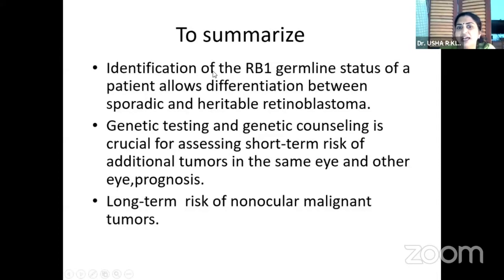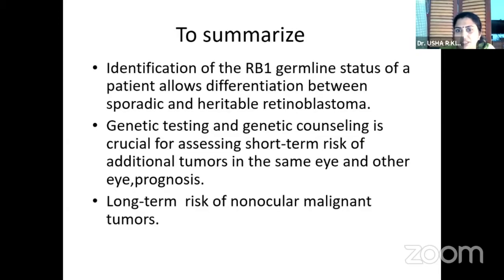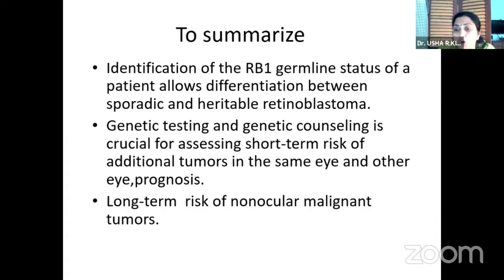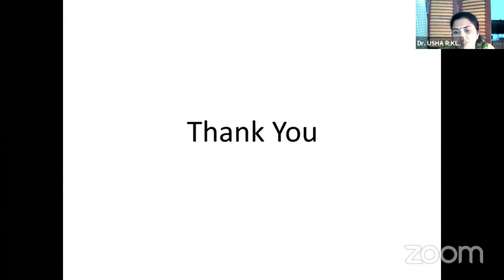To summarize — identification of the RB1 germline status allows differentiation between sporadic and heritable. Genetic testing and genetic counseling is crucial for assessing short-term risk of additional tumors in the same eye and other eye, and also helps in prognosticating long-term risk of non-ocular malignant tumors as well.